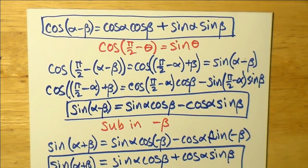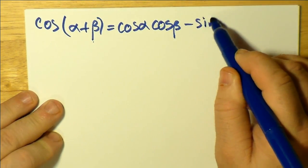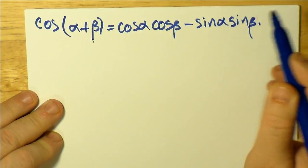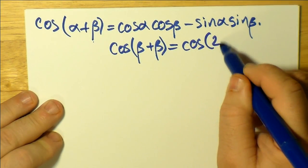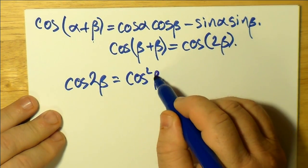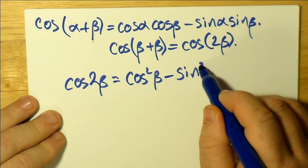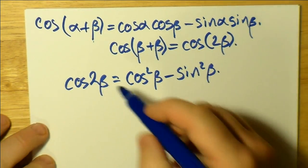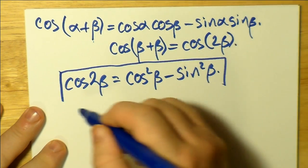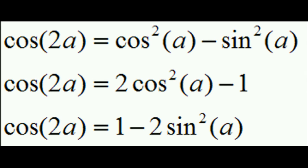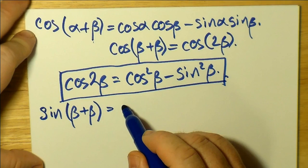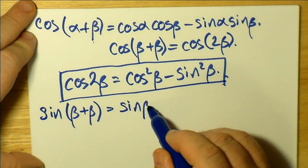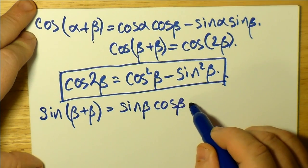We can actually use the formulas for cos(α + β) and sin(α + β) to make what are called double angle formulas. If we set α equal to β, that gives us cos(β + β) or cos(2β). This makes cos(β)cos(β) = cos²(β) and sin(β)sin(β) = sin²(β). Using the Pythagorean identities, we can actually make three different ways of expressing the double angle formula for cosine.